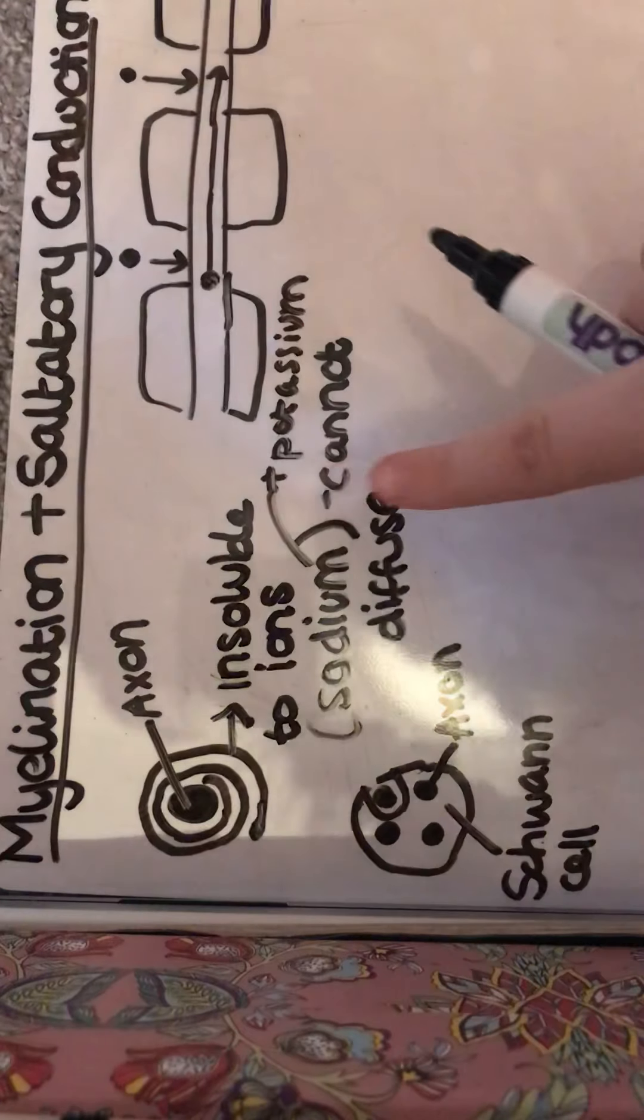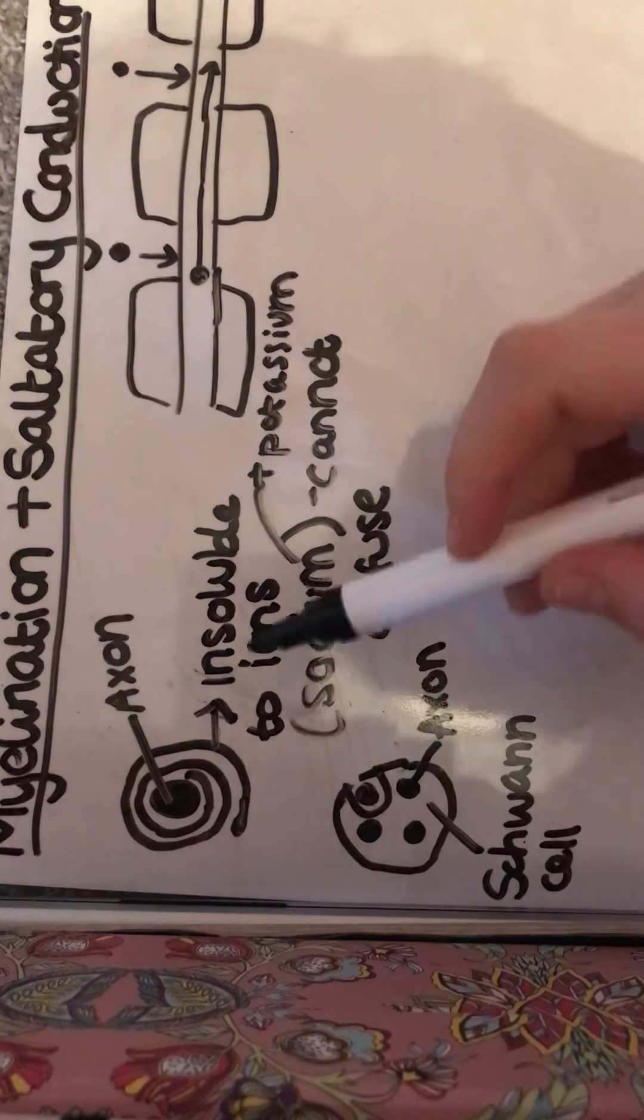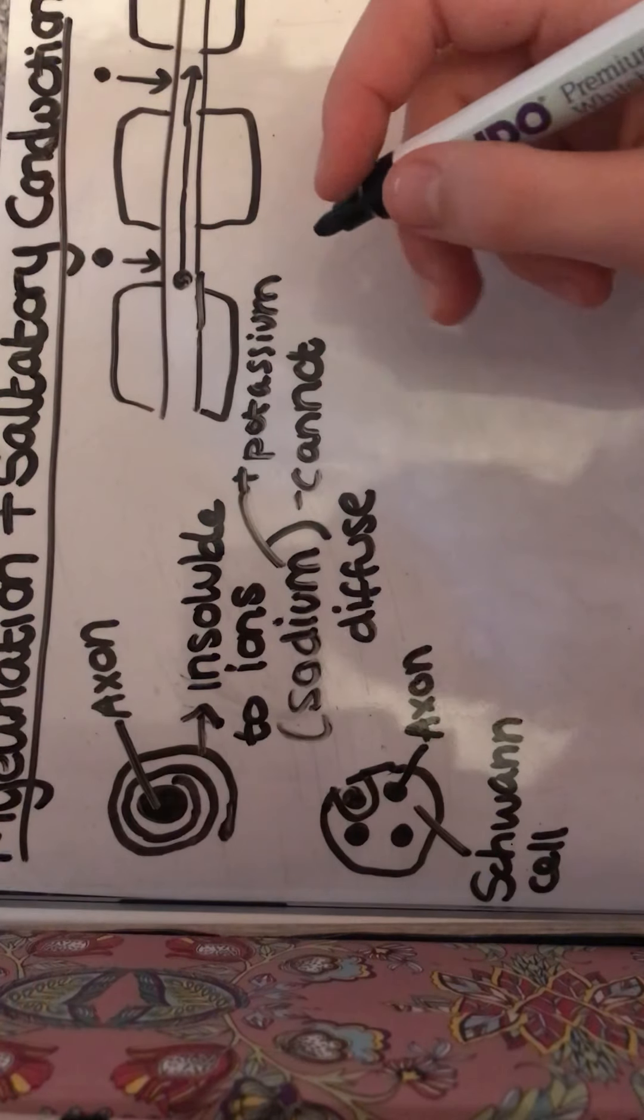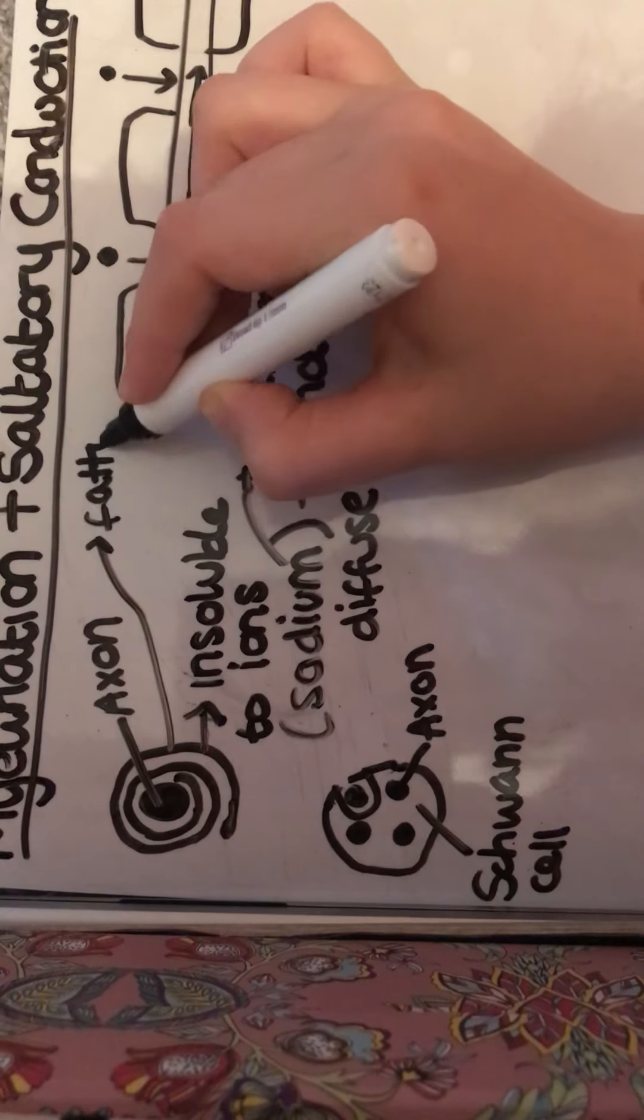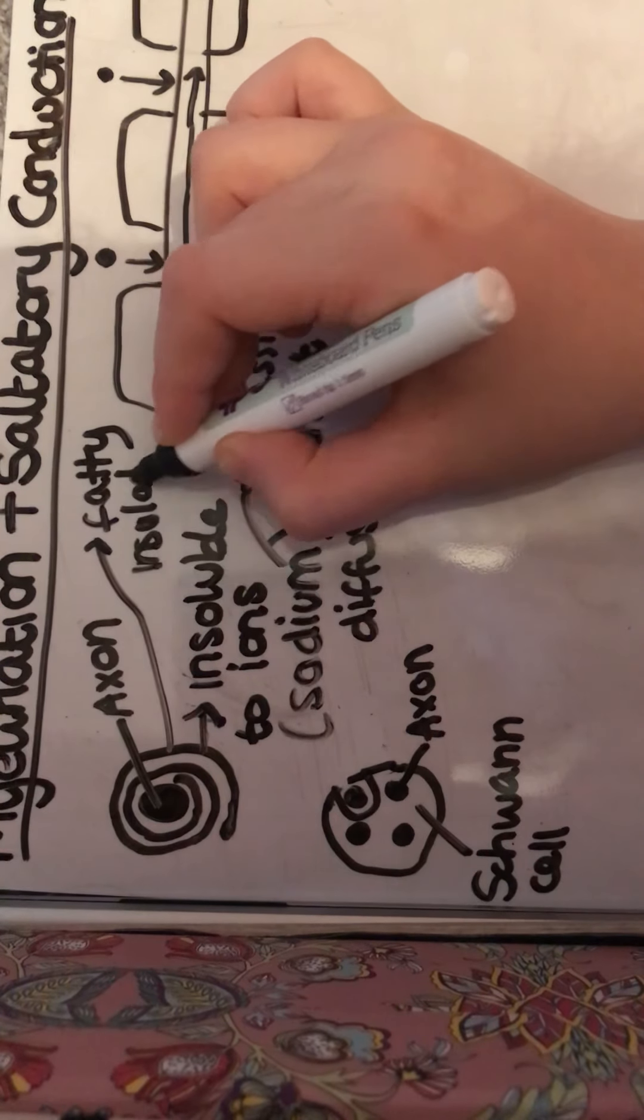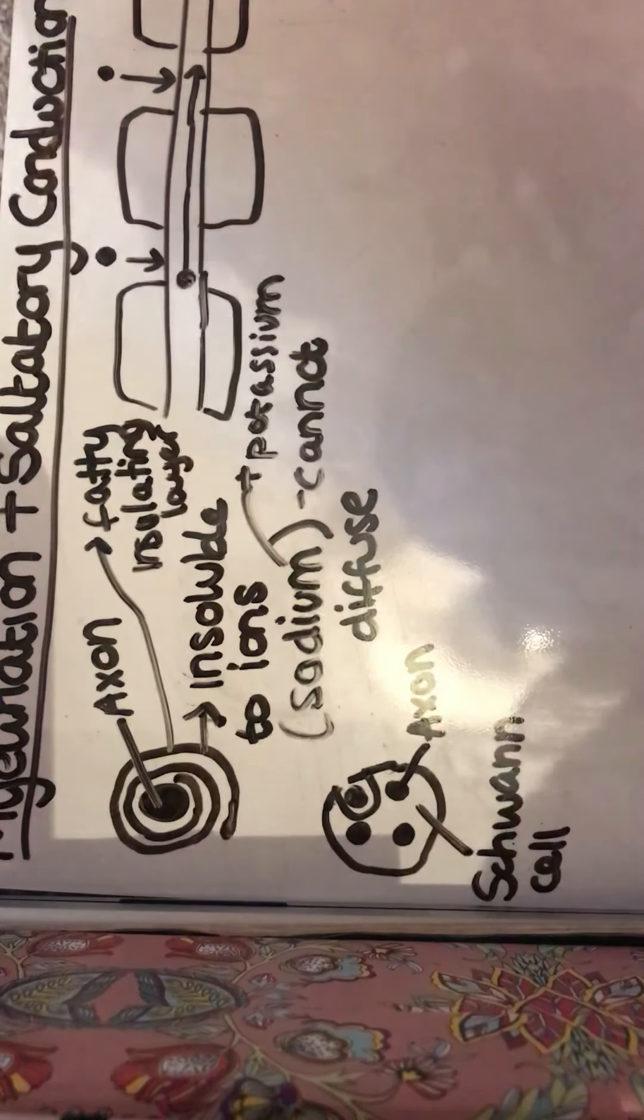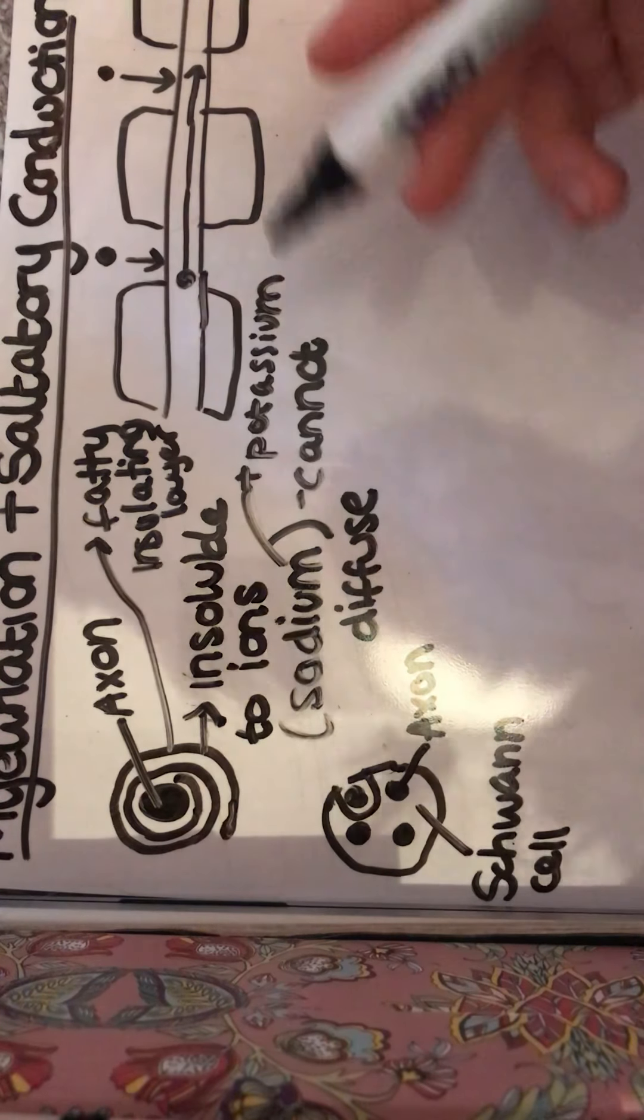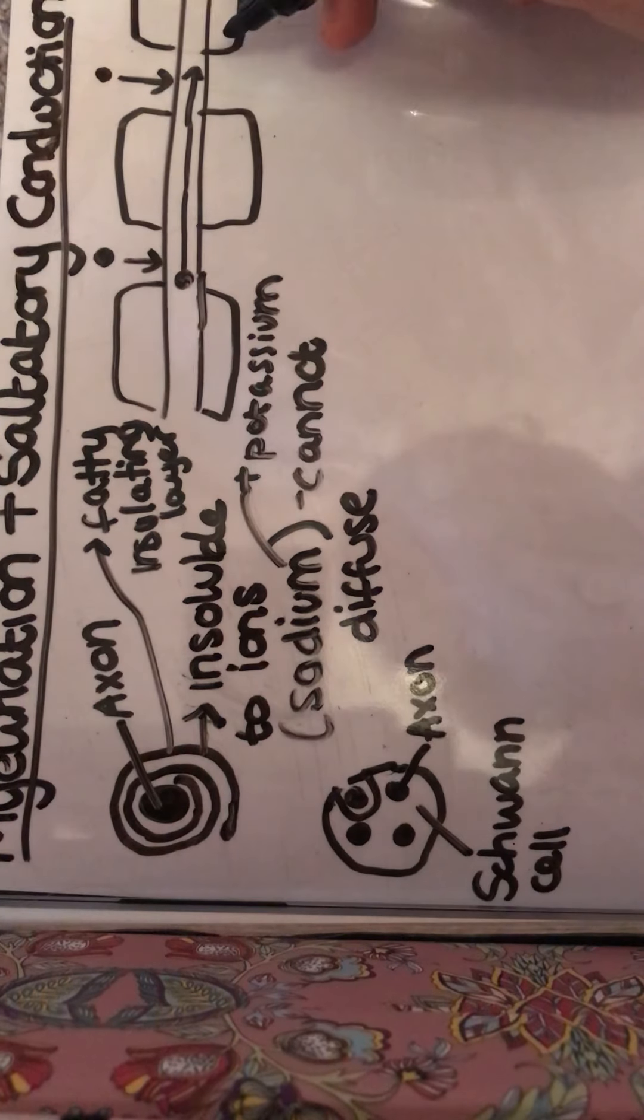So what this means then, if ions cannot diffuse across our myelinated sheath, which is like a fatty insulating layer, I'll just write that here—it's a fatty insulating layer. So because these cannot diffuse through, it's going to have to jump through the nodes of Ranvier, which are these small gaps in between the Schwann cells.